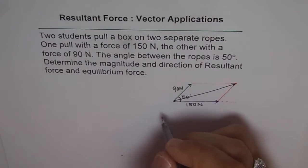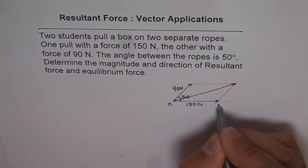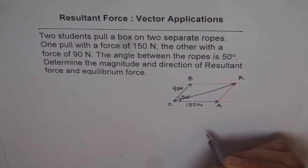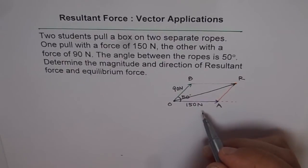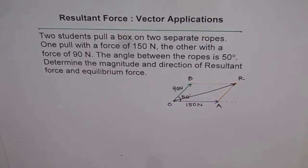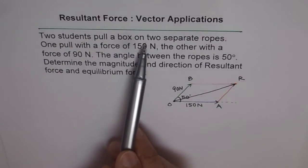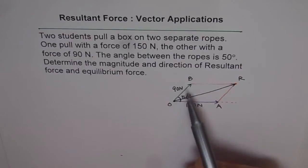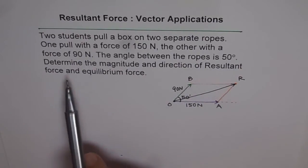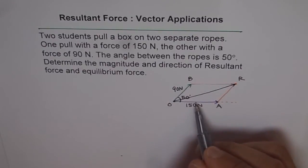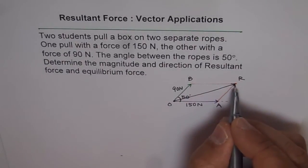Let's say this is my original point O, student A pulling at 150 Newtons, point B, and R is the resultant. OR represents the net effect of these two forces. Resultant force is the net effect of all the forces acting at a point. This is my box. Re-reading the problem: two students pull a box — one at 150 Newtons, the other at 90 Newtons, angle 50 degrees. Resultant force is the net effect of these two, and the equilibrium will be equal and opposite to the resultant force.